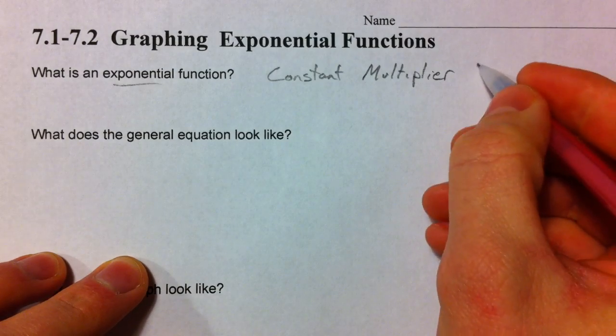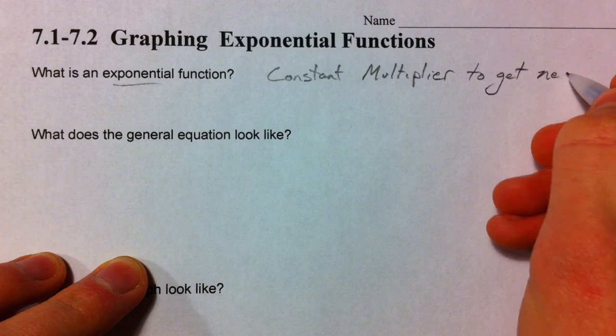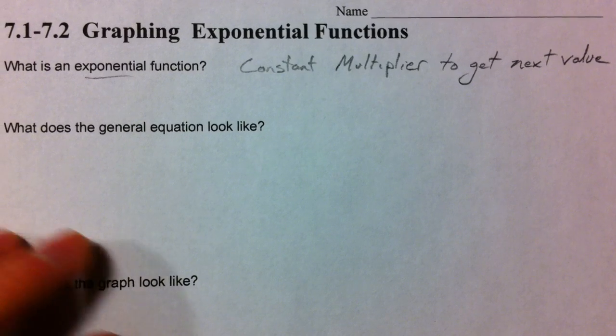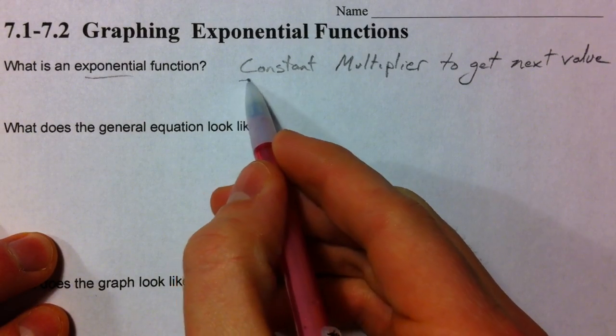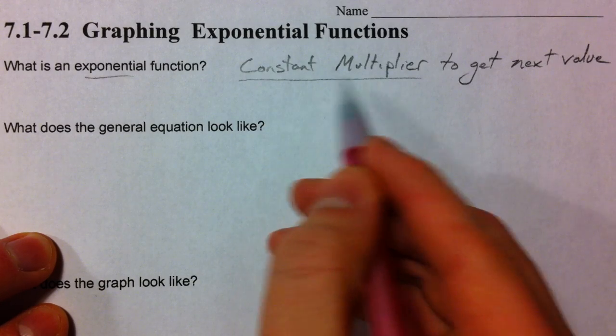So, constant multiplier to get the next value. You can think of it as a geometric sequence, if you will, but a lot of you don't know what that is yet. But it's a sequence of numbers that you get to the next term by multiplying.